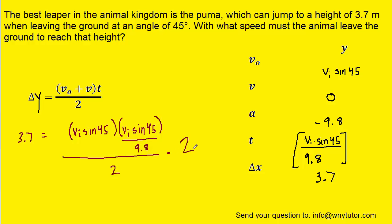And then since we have division by two, we can multiply both sides of the equation by two. Then we have division by 9.8, so we can multiply both sides of the equation by 9.8.